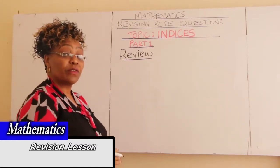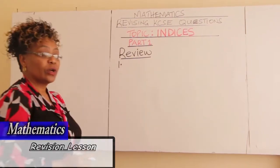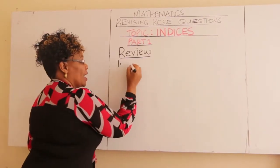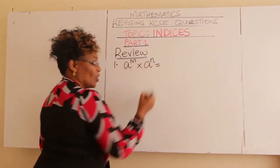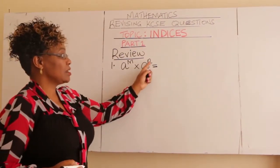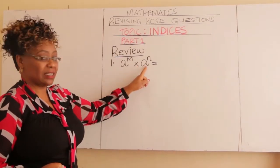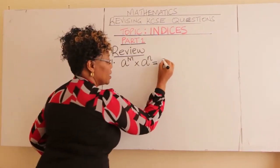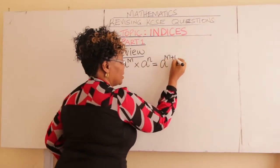We start with the laws of indices so that you can be able to handle those KCSE questions. Number one: if you have A raised to M times A raised to N, when you are multiplying common bases, what do you do to the powers? You write the base and then you add the powers.